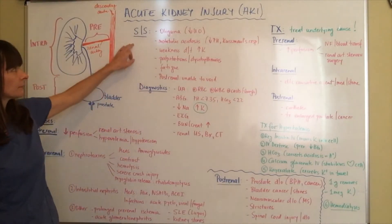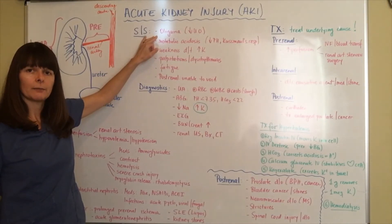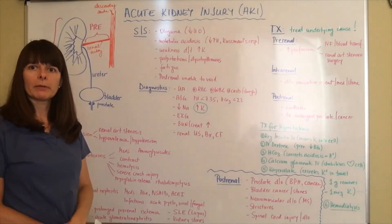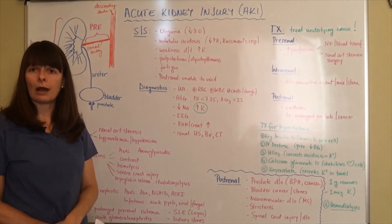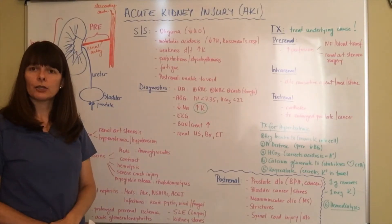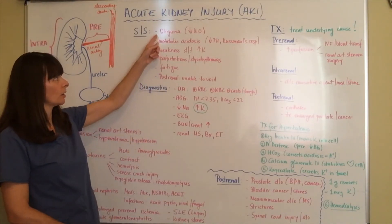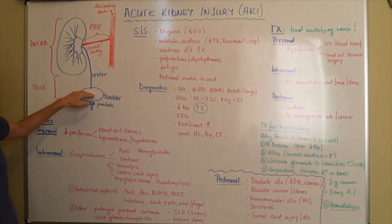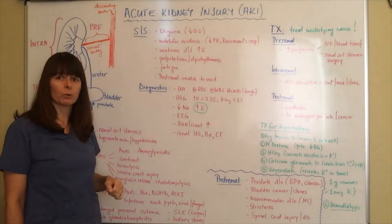Signs and symptoms include oliguria — a decrease in urine output. In adults, urine output needs to be at least 30 milliliters per hour. Since we don't urinate once an hour but rather every three to four hours, you need to calculate the average. If it's less than 30 mL per hour, that's oliguria. If the kidney is not functioning — whether due to insufficient perfusion, intrarenal causes, or post-renal obstruction — urine output will go down.